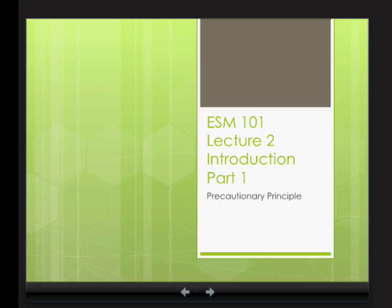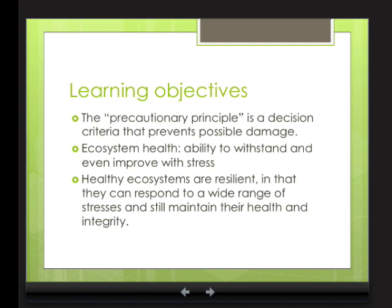This is one part of Lecture 2, and the other part deals with patterns. This part deals with the precautionary principle. The learning objectives for this part are: the precautionary principle as a decision criteria that helps prevent possible damage when you don't have enough information; how to increase and restore ecosystem health; and the idea of resilience. Those three things are all related.